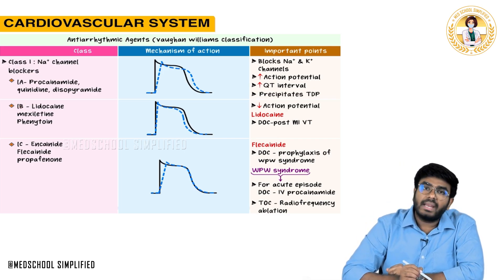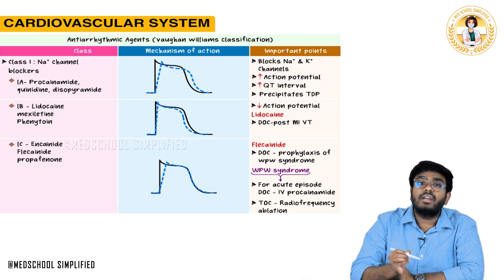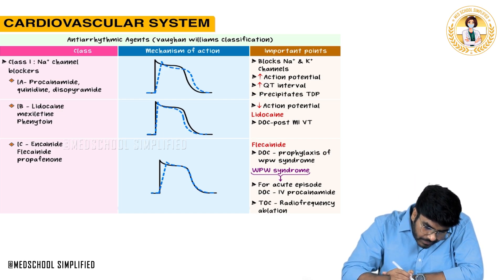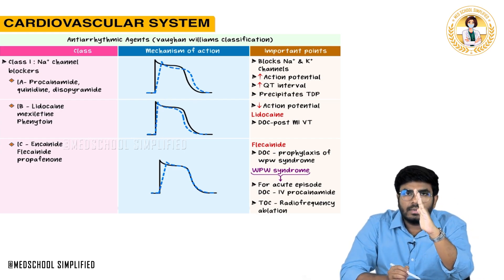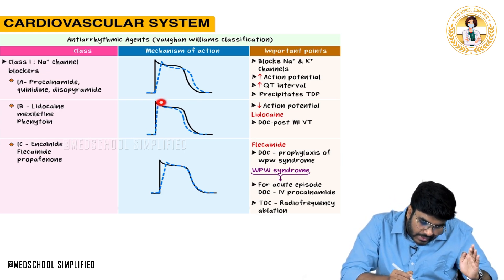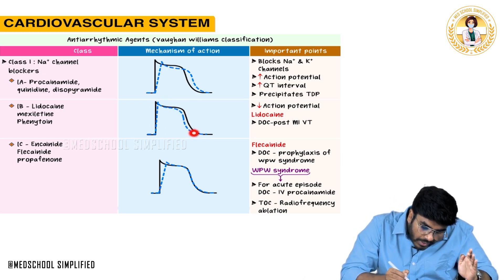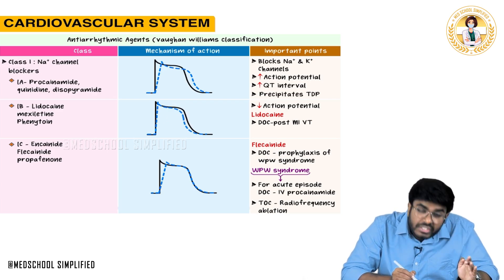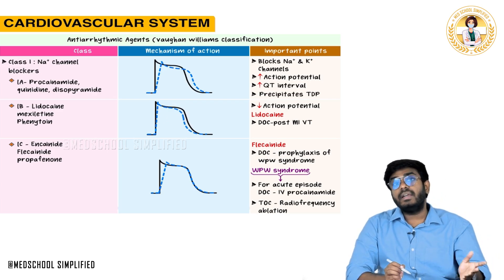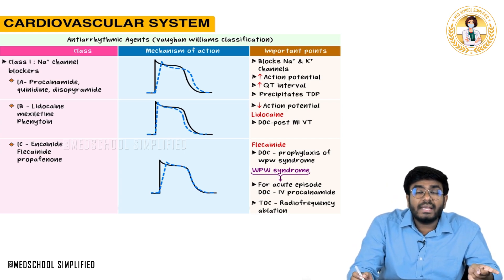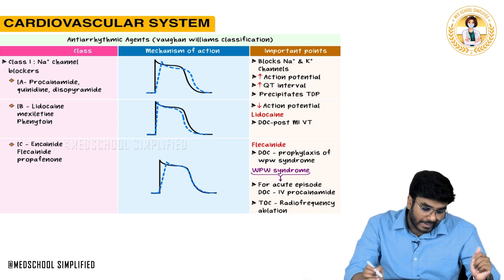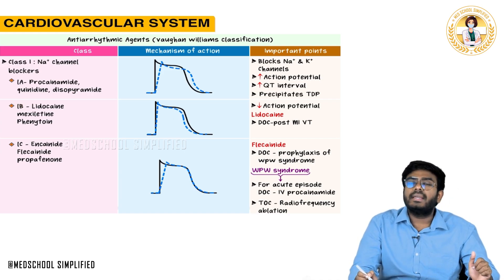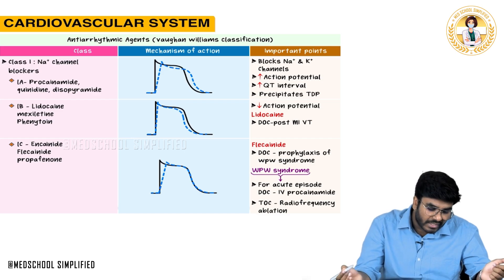Class 1B anti-arrhythmic drugs include lidocaine, mexiletine, and phenytoin. They are sodium channel blockers, so phase 0 depolarization slope is slightly decreased. However, repolarization happens very quickly. Therefore, action potential duration is actually decreased — not increased. Class 1B anti-arrhythmic drugs decrease the action potential duration. This is a key exam point.